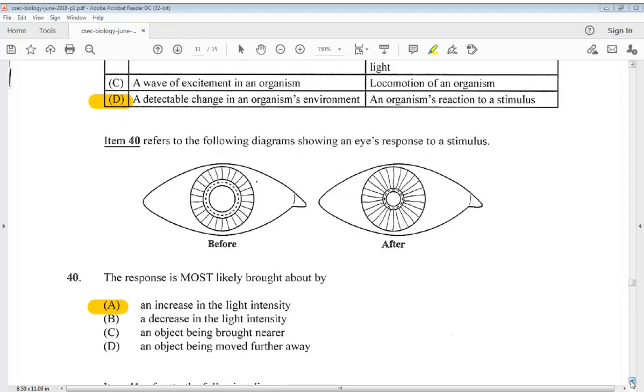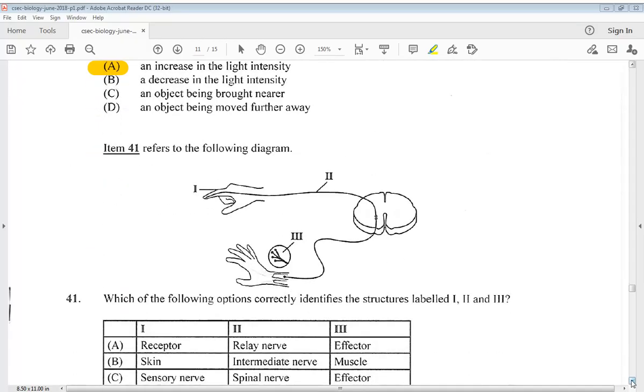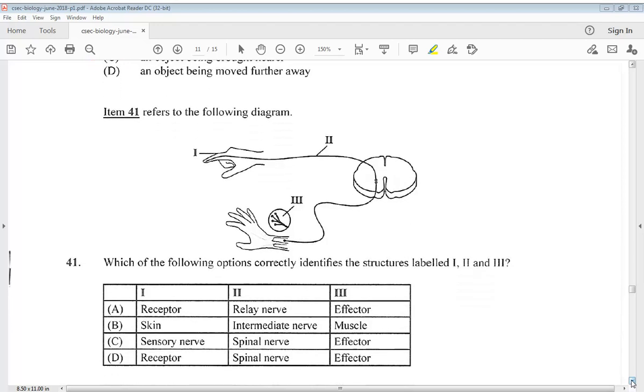Let's go to number 41. Item 41 refers to the following diagram. Which of the following options correctly identifies the structures labeled 1, 2, and 3? So we know 1 is the receptor, 2 is the spinal nerve, and 3 is the effector. So therefore, our answer for 41 would be D.